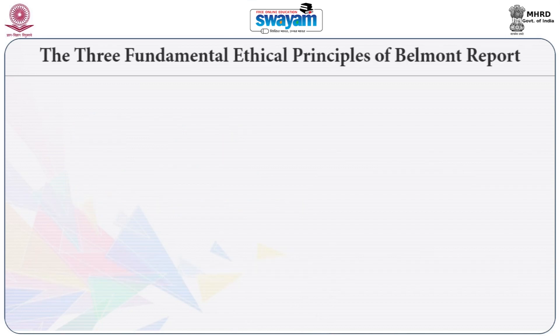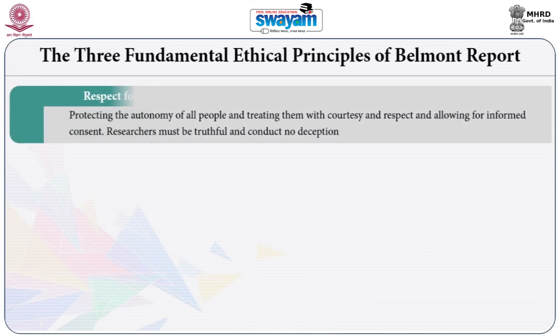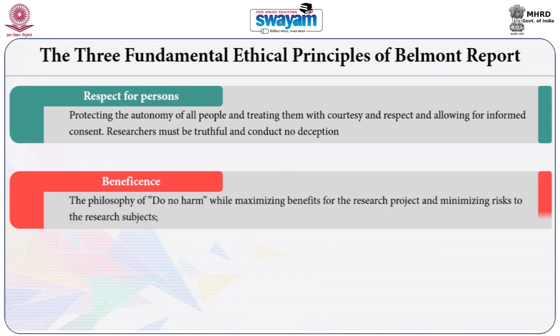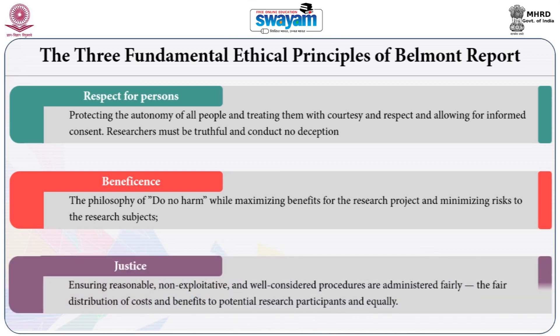The three fundamental ethical principles of the Belmont Report are: Respect for Persons — protecting the autonomy of all people, treating them with courtesy and respect, and allowing for informed consent; researchers must be truthful and conduct no deception. Beneficence — the philosophy of do no harm while maximizing benefits to the research project and minimizing risk to research subjects. And finally, Justice — ensuring reasonable, non-exploitative and well-considered procedures are administered fairly, with fair distribution of costs and benefits to potential research participants equally.